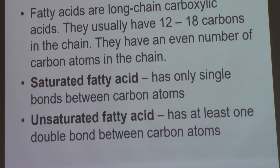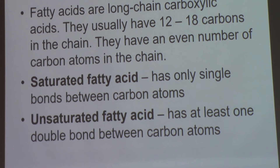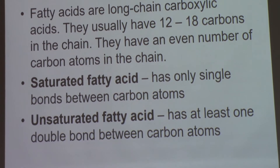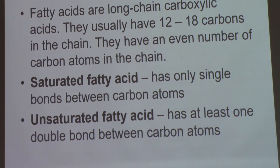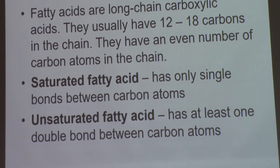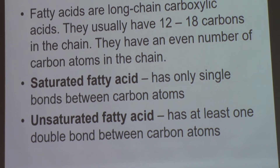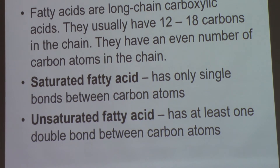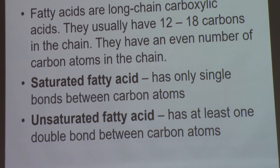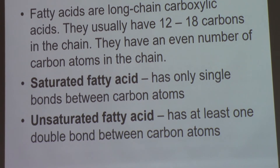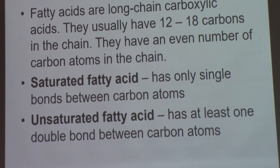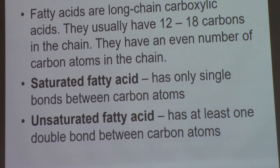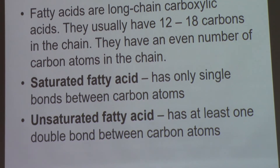Fatty acids are long-chain carboxylic acids. They have between 12 and 18 carbons in the chain and will always have an even number of carbons. There are two types: saturated fatty acids, which have nothing but single bonds between the carbons, and unsaturated fatty acids, which have at least one double bond between the carbons.